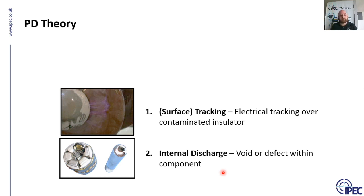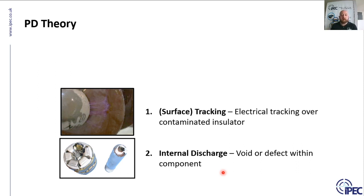Surface tracking is most commonly found inside cable terminations, but it can of course occur on bushings and anywhere there's a high voltage and a neighbouring open surface. Internal discharge can occur anywhere inside cable terminations — if they're solid terminations — inside the end of cables, inside circuit breakers, inside CTs and VTs; all different components of the equipment.